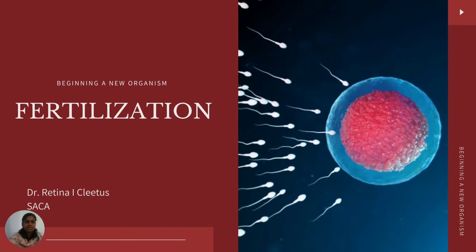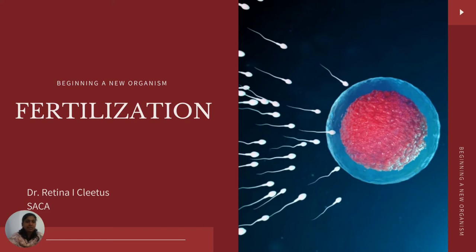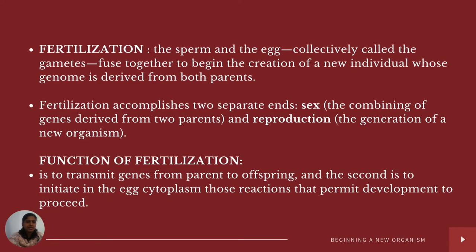Fertilization marks the beginning of a new organism. It is where the sperm and egg, which we collectively call gametes, fuse together to begin the creation of a new individual whose genome is derived from both parents. It accomplishes two separate ends: sex, where the combination of genes from two parents occurs, and reproduction, where a new organism begins. The functions of fertilization are to transmit genes from parents to offspring and to initiate the egg cytoplasm reactions that permit development to proceed.